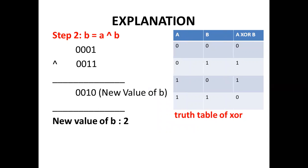Step 2, B equal to A XOR B. New value of A is 1 and B is 3. When we do bitwise XOR of A and B, we get 1 XOR 3 is 2, which is the new value of B.